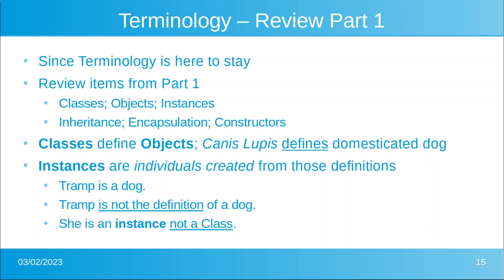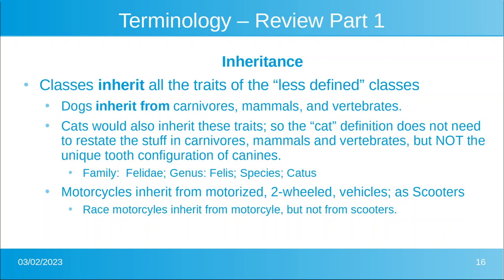Next is inheritance. Classes inherit all of the traits of the less defined or more vague classes. Dogs, for example, inherit from carnivores, mammals, and vertebrates. Cats, which are very similar, would also inherit from carnivores, mammals, and vertebrates. But they do not inherit the unique tooth structure of canines, which is where they branch off to a different family, genus, and species. Motorcycles inherit from motorized two-wheeled vehicles, just like scooters do. But race motorcycles inherit from motorcycles — that's where the branch splits. That's inheritance.